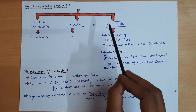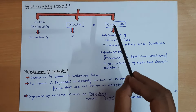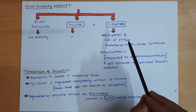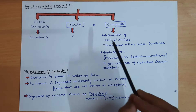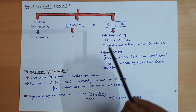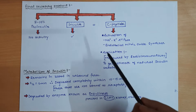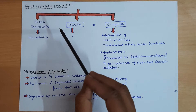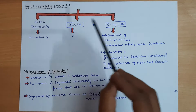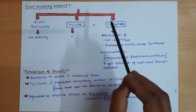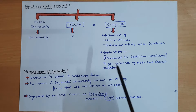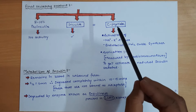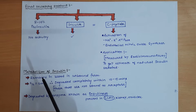The final secretory product contains 5–10% pro-insulin (with no biological activity), plus insulin and C-peptide in equimolar amounts. C-peptide functions to activate enzymes like sodium-potassium ATPase and endothelial nitric oxide synthase. Clinically, C-peptide levels can be measured by radioimmunoassay to estimate the natural insulin secretion from the pancreas.